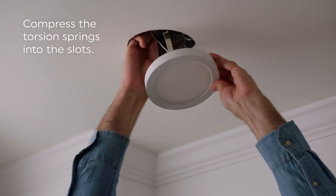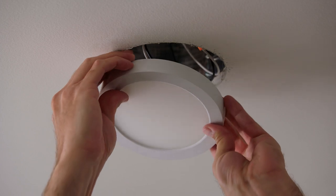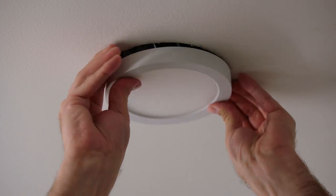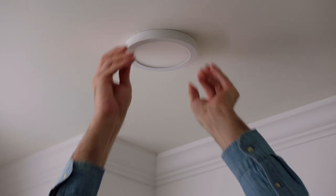Compress the torsion springs into the slots and tuck all the wires into the recessed housing. Then, carefully push the trim up until it's flush with the ceiling.